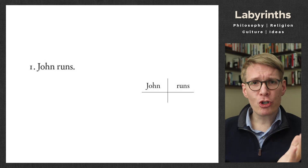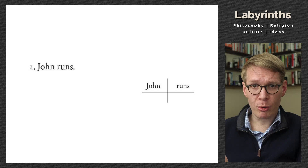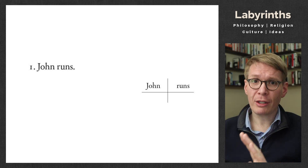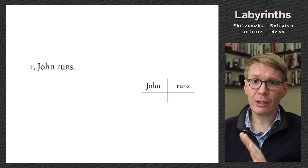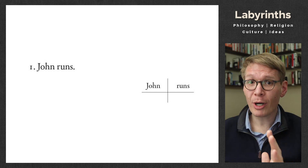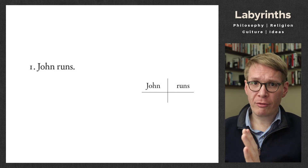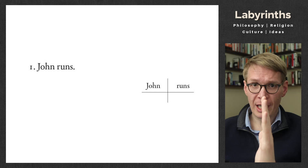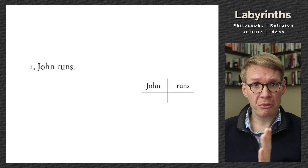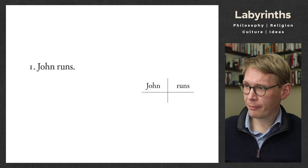Take the sentence 'John runs.' When diagramming a sentence, you want a baseline — a horizontal line going across. The subject always goes in the upper left position. The verb goes after the subject, and you indicate the relation between subject and verb by placing a vertical line that goes through the baseline. John runs — simple sentence, subject and verb only, line going through.